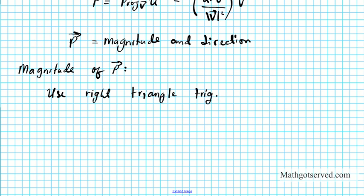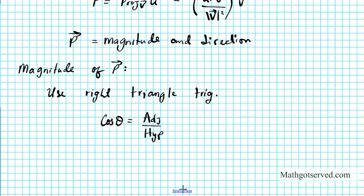Remember that cosine theta is basically the adjacent over the hypotenuse. So we're going to be taking a look at the magnitudes of the vectors to represent the side lengths.